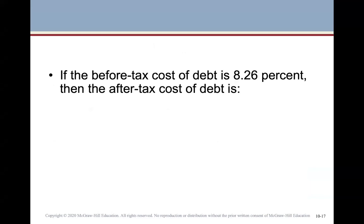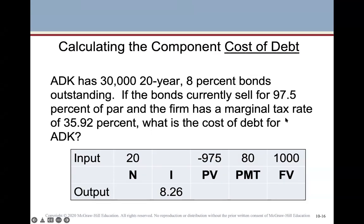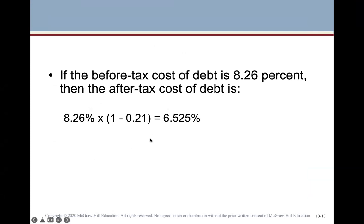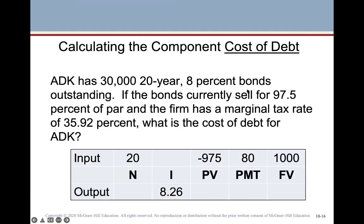The after-tax cost of debt is 8.26% × (1 − 0.21) = approximately 6.53%. An important note: the marginal tax rate and the corporate tax rate are not the same thing. We use the corporate tax rate, which is a flat 21% in the United States. The question will generally give you the tax rate — do not use the marginal tax rate.